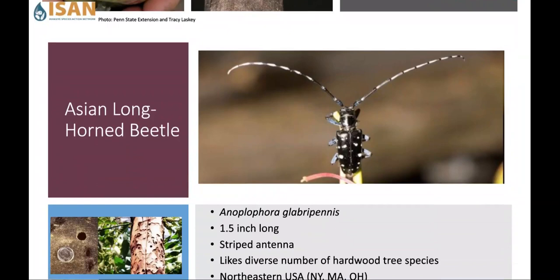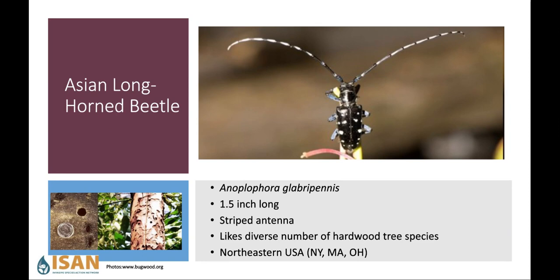Next is the Asian longhorned beetle — check out those antennae, they are long, and it has nice white stripes. This insect is troublesome because it likes a lot of different hardwood tree species, with maple being one of its favorites. One sign of its presence is a hole about the size of a dime where it emerges after chewing on the interior part of a tree. This has mostly been found in the northeastern United States — places like New York, Massachusetts, and Ohio — but we want to be on the lookout regardless of where we live.